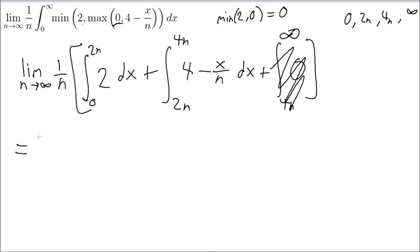So this is equal to the limit n approaches to infinity, 0 to 2n, we have 2 over n dx. What do you do? Right. What now?